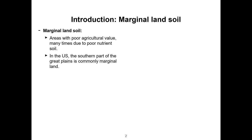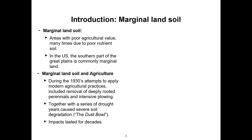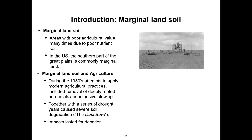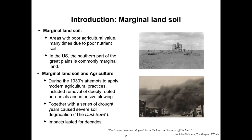To put it in a historical perspective, during the 1930s they tried to apply modern agricultural practices in these areas, like deep plowing but also removal of the deep-rooting perennials. This, together with a series of drought years, caused severe land degradation and a phenomenon called the Dust Bowl. And the impact of the Dust Bowl lasted for decades.